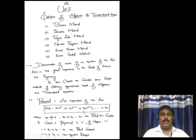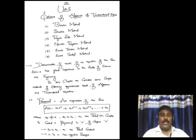Next, we are going to see some definitions. Number one is polynomial. A polynomial is an expression of the form f(x) = a₀xⁿ + a₁xⁿ⁻¹ + a₂xⁿ⁻² + ... + aₙ. This is called a polynomial in x of degree n, where a₀, a₁, a₂, ..., aₙ may be real or complex numbers.